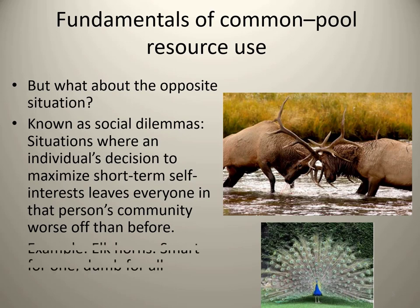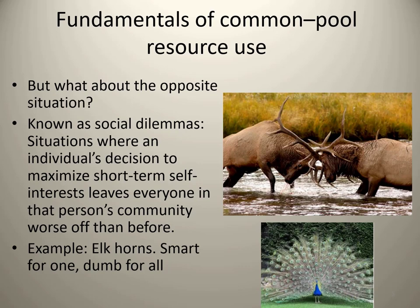Let's look at social dilemmas in biology. Large elk horns are smart for the individual — beneficial from the perspective of natural selection — but larger elk horns are bad for the group. Evolution doesn't just occur at the level of the individual; it occurs at the level of the cell, the molecule, and even the group. Cancer is a total evolutionary success story at the level of the cell — unhindered cell growth and reproduction — but it's obviously not good for the individual.